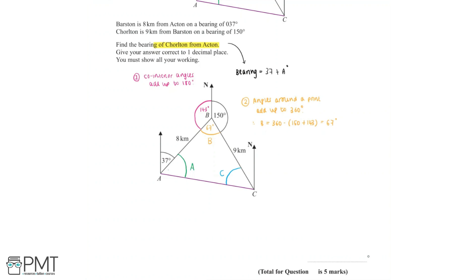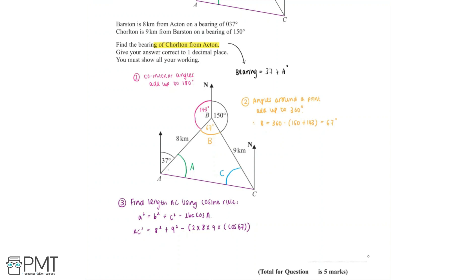Now that we've found angle B, we can use it to find the length of AC using the cosine rule, which states a² = b² + c² − 2bc·cos A. Substituting in the values, AC² is equal to 8² plus 9² minus (2 × 8 × 9 × cos 67). Putting this into our calculator, AC² is equal to 88.7347..., and so AC is equal to 9.4199... kilometers.